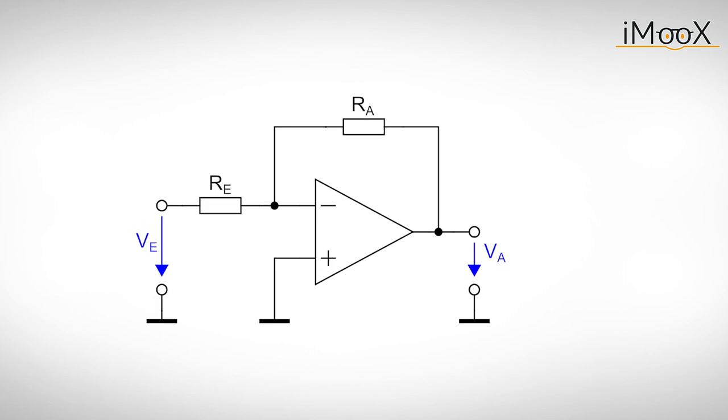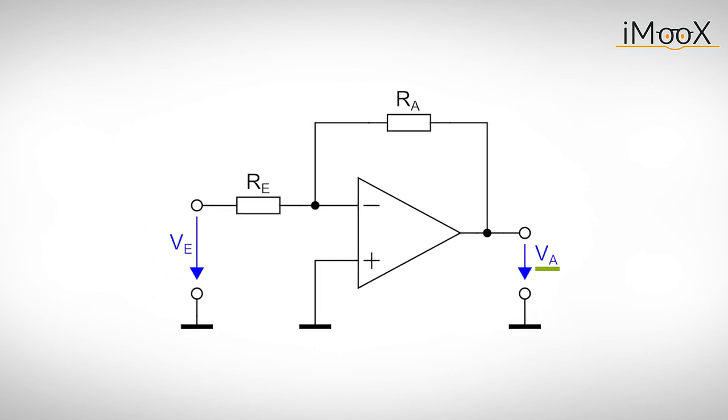To determine the output voltage Va as a function of the input voltage Ve we apply the rules we have learned. This means Vd is 0V and I plus and I minus are 0A. As the non-inverting input is connected to ground the potential at the inverting input is 0V. Thus the voltage drop over Re equals the input voltage Ve.